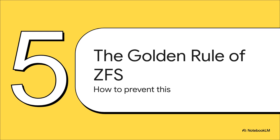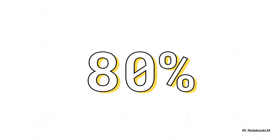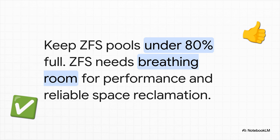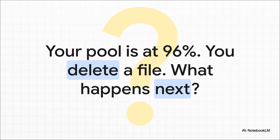All of those are pretty painful ways to fix a problem you're already deep in. The real takeaway here isn't the cure, it's the prevention. There's one single golden rule that will help you avoid this entire nightmare: 80%. Keep your ZFS pool under 80% full. This is not a suggestion — it's basically a requirement for good health and performance. ZFS needs that empty space, that breathing room, to do its copy-on-write magic, to avoid horrible fragmentation, and most importantly, to make sure that when you delete a file, you actually get your space back. That last 20% isn't wasted space — it's the cost of doing business, crucial operational headroom. If your pool is at 96% and you just deleted a massive file, you now know the terrifying answer: absolutely nothing happens.